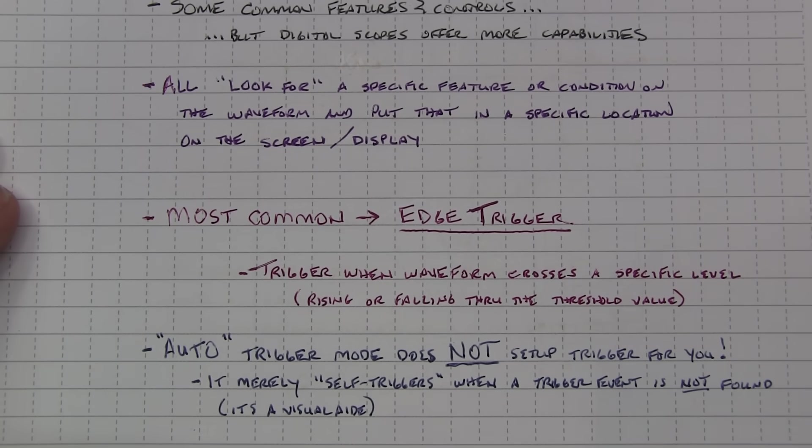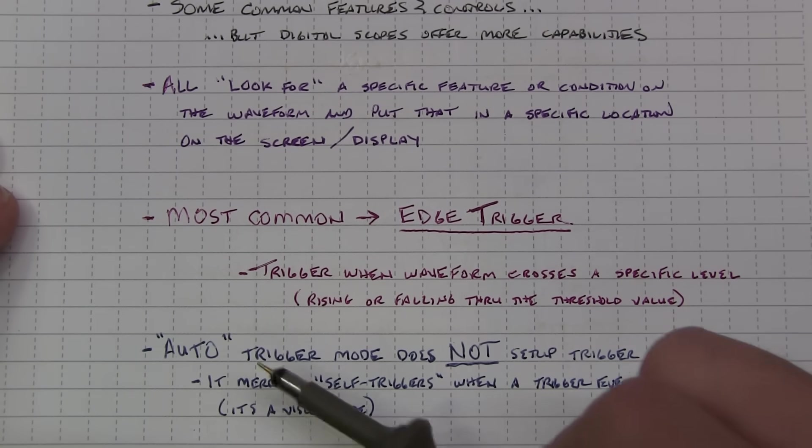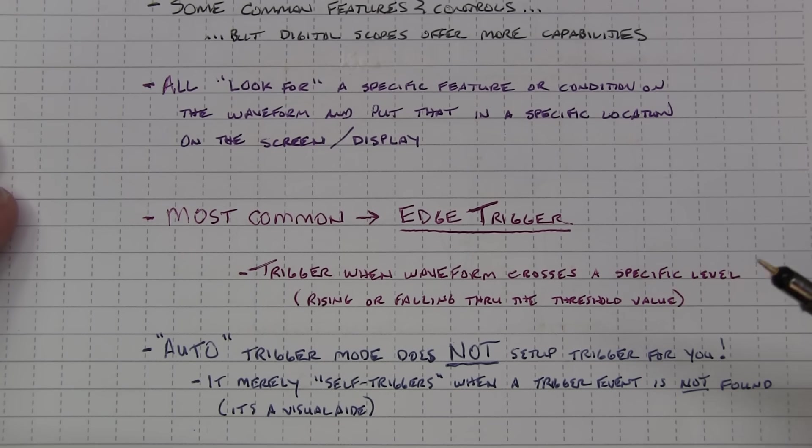Now one common misconception I want to put out here is that the auto trigger mode does not automatically set up the trigger for you. That's not its function. It merely self-triggers the scope when the trigger event that you've set up isn't found. So it's really a visual aid to put some kind of a waveform on the screen even though it's not triggered by your signal so you can see what's wrong so you can set things up properly. So auto trigger is not like an auto set for trigger. It just keeps the scope live and running so you're not just staring at a blank screen until your trigger is properly set up.